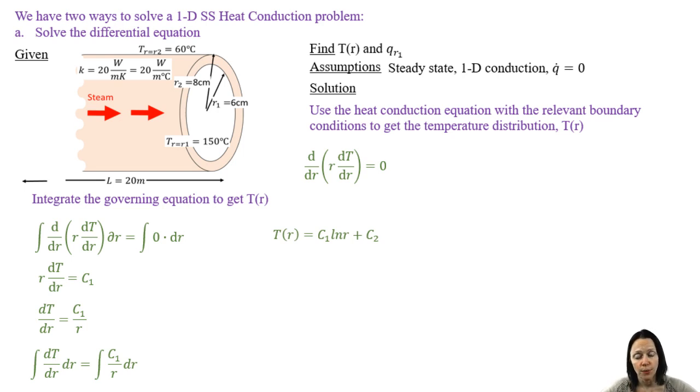And to solve for those constants, we need to apply the boundary conditions. If we apply the first boundary condition, we get an expression for t at r1, the inner radius. If we apply the second boundary condition, we get an expression for t at r2, the outer radius.